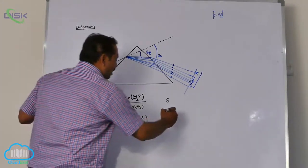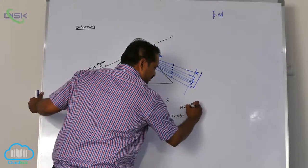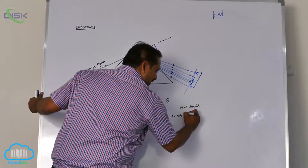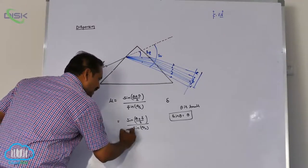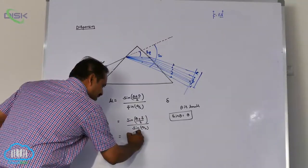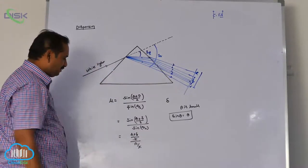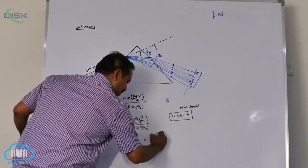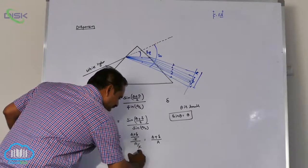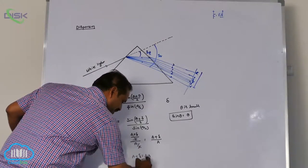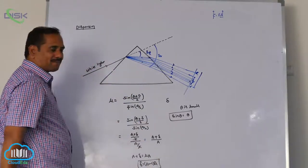When theta is small, sine theta can be written as theta. So sin((A+δ)/2) / sin(A/2) becomes (A+δ)/2 divided by A/2, and the 2s cancel, giving (A+δ)/A. Therefore A+δ = μA, which gives δ = (μ−1)A. This is applicable for a small-angled prism.